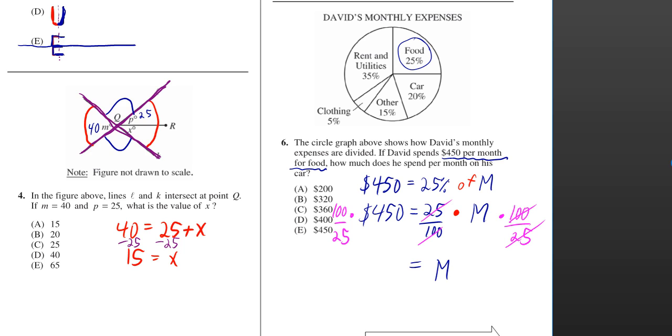Well, 25% you can rewrite as 25 over 100, and of you can change to a multiply sign. So we've got 25 over 100 times M is equal to 450.